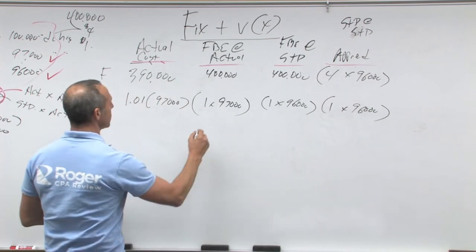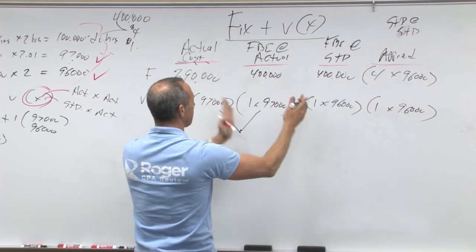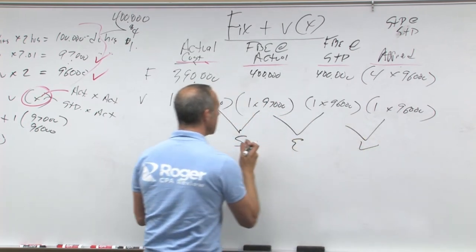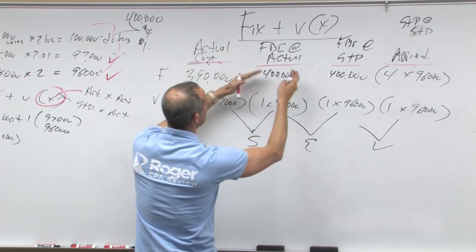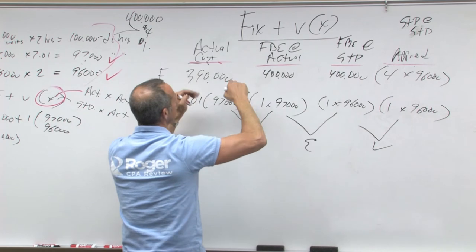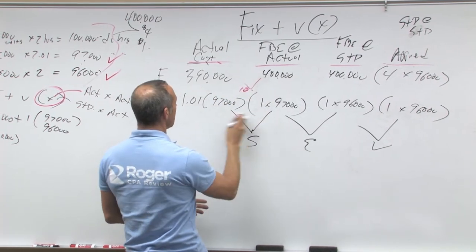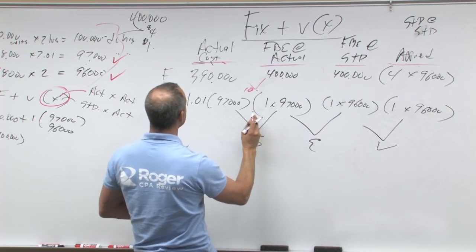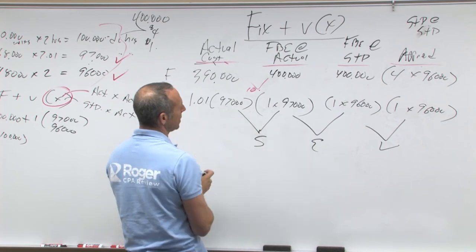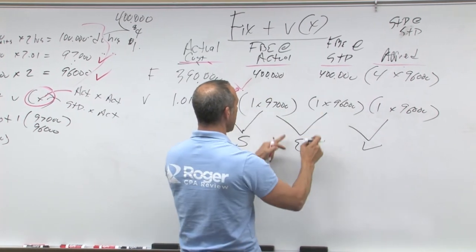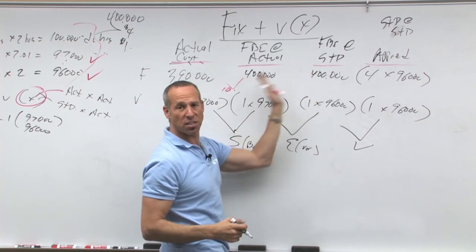Now as you continue through this, what you're going to notice is the difference here. Remember I said four columns give you three differences — one, two, three — this is SEV: spending, efficiency, volume. The spending variance is both fixed and variable, because these are both different. You actually spent 390, that's favorable. So as we go this way, if this is bigger it's good; if this is smaller, that's bad. So this would be a favorable $10,000 variance. This one's going to be unfavorable, because this is bigger than this — it's unfavorable by a penny times 97,000. Notice these two are the same, that's why this one's both fixed and variable. This one is variable only, because notice these are different while that one's the same. Why? Because within the flexible budget, fixed is fixed.